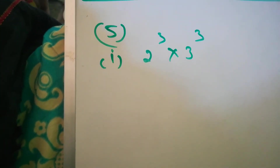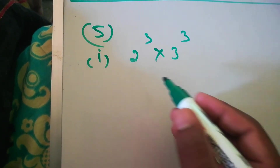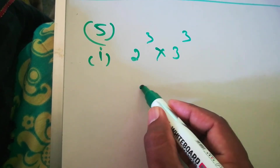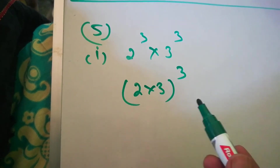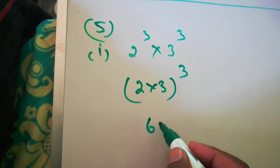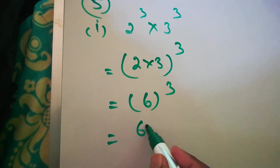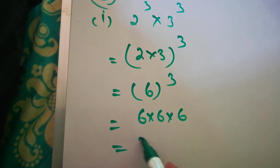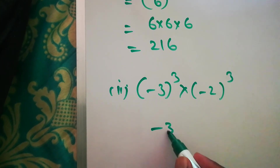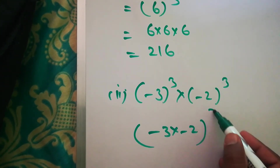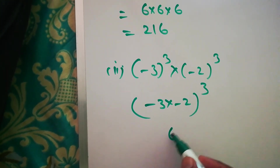Question number 5: Evaluate the following. 2^3 times 3^3 — since the powers are the same, we can multiply the bases together: (2×3)^3 = 6^3. Multiplying 6 three times: 6×6×6 = 216. Next: (-3)^3 times (-2)^3 — same power, so write (-3×-2)^3 = (+6)^3 = 6^3 = 216.